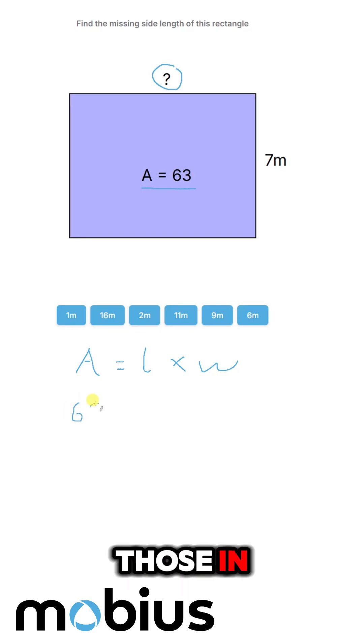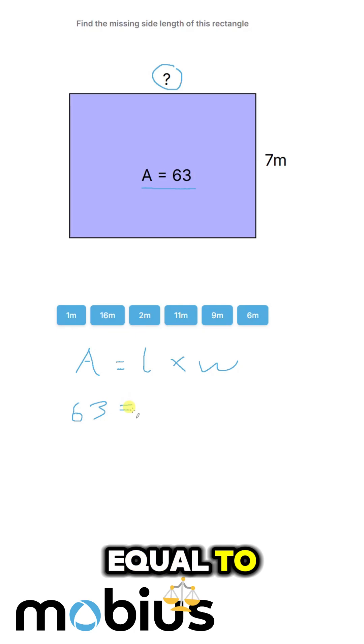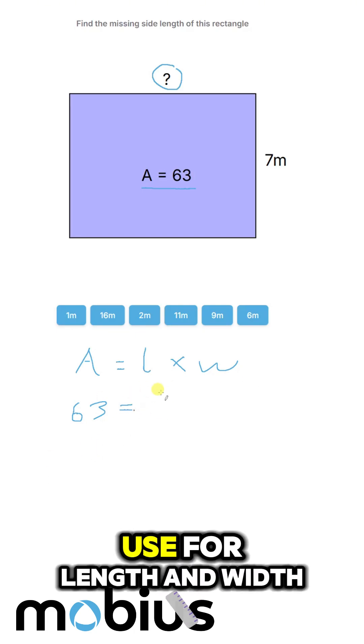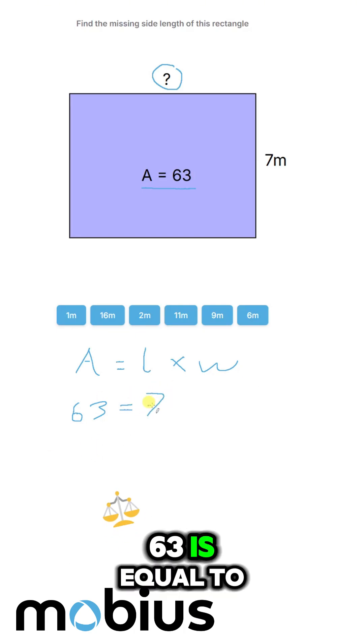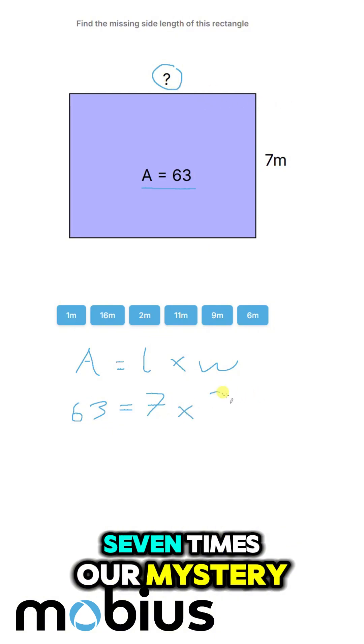So if we plug those in, we know that 63 is equal to, doesn't matter what we use for length and width, 63 is equal to seven times our mystery side here, seven times this.